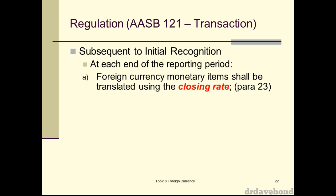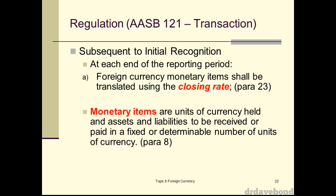Subsequent to initial recognition, at the end of each reporting period, we look at monetary items first. If it's a foreign currency monetary item, you translate it using the closing rate — that is, the financial year-end date rate. A monetary item is a unit of currency held, or an asset or liability to be received or paid in a fixed or determinable number of units of currency — so foreign currency loans, accounts payable, accounts receivable — all those are monetary items.